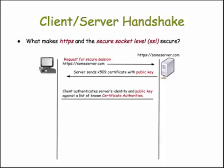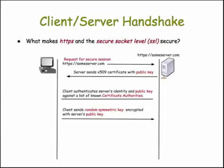The client also uses the certificate authority's information to confirm that the public key that was sent does belong to Amazon. So in other words, it can be assured that when it sends an encrypted message back to the server, it's sending it to Amazon and that only Amazon can read the message. Once the client authenticates the server's identity and public key, it uses the public key to encrypt a randomly generated symmetric key. The client generates this internally, encrypts it with the server's public key, and sends it back to the server.